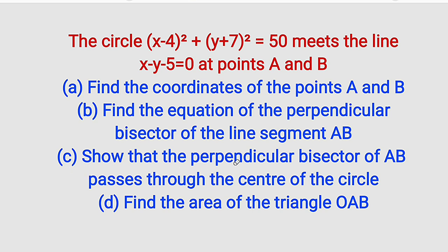Part C, we are asked to show that the perpendicular bisector of AB, which is the equation we are going to form, passes through the center of the circle. And the last question, we are asked to find the area of the triangle OAB. Alright, let's get started.